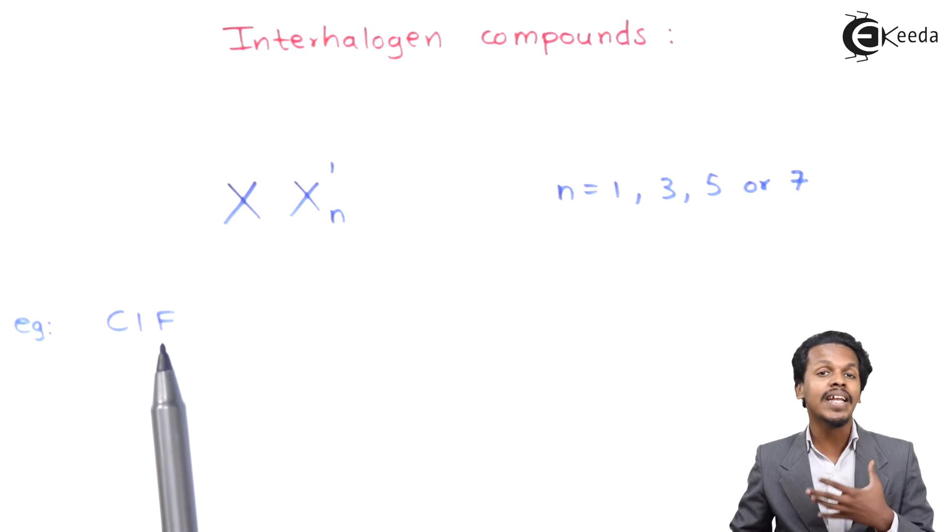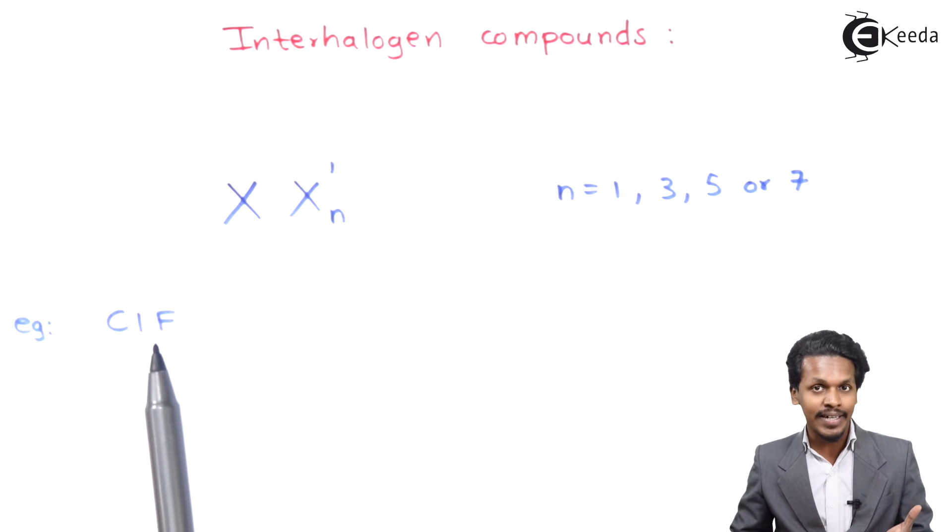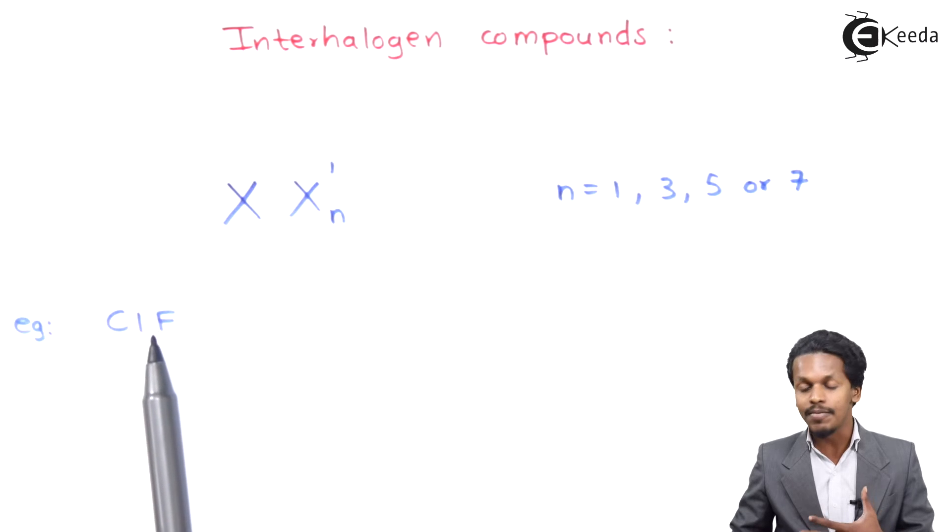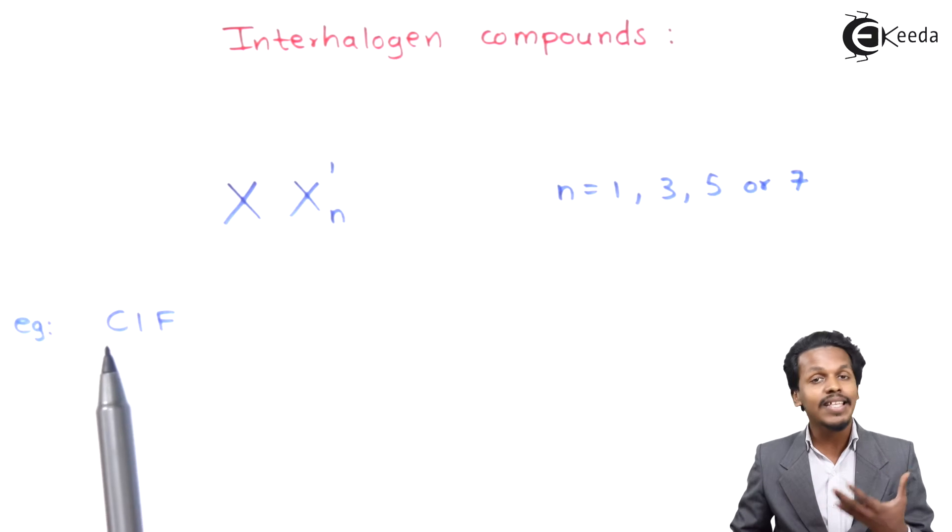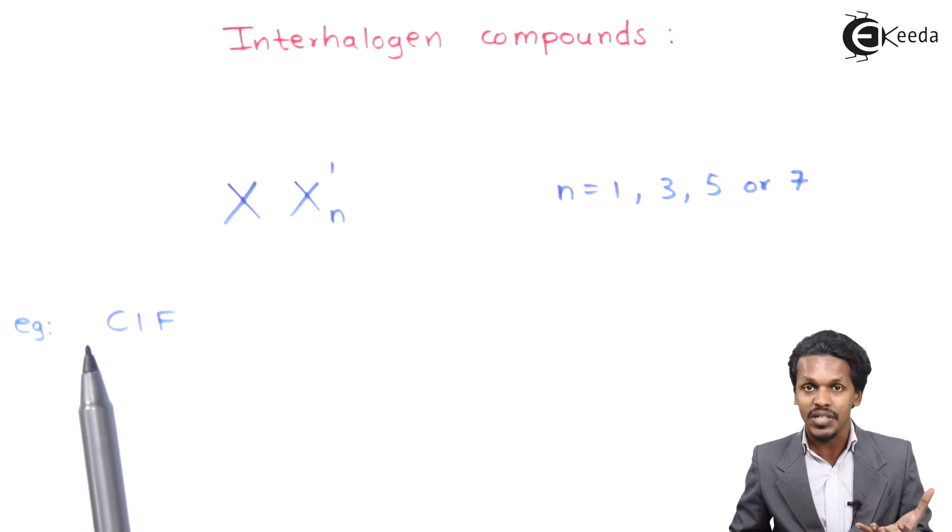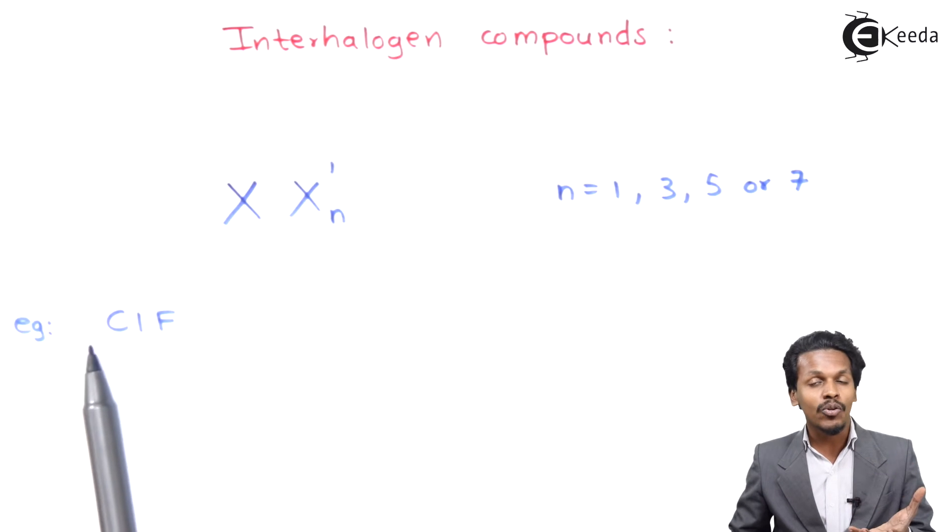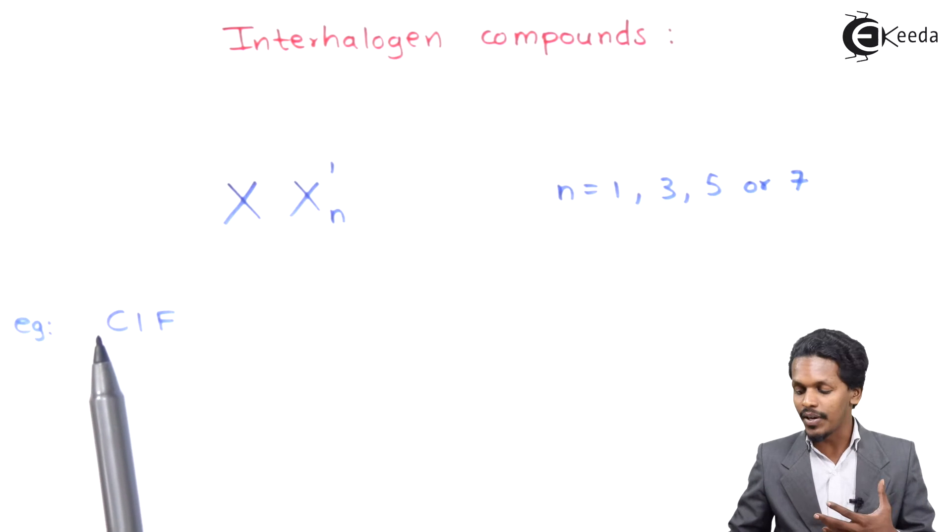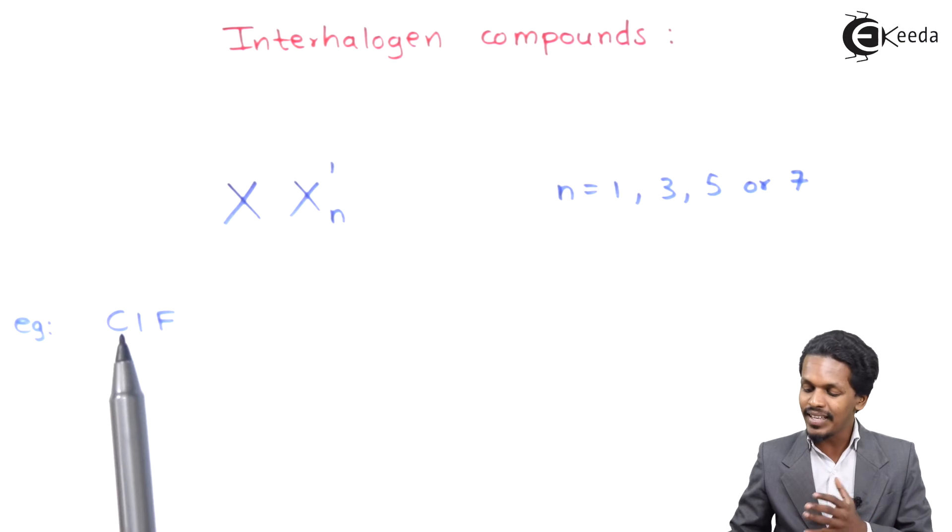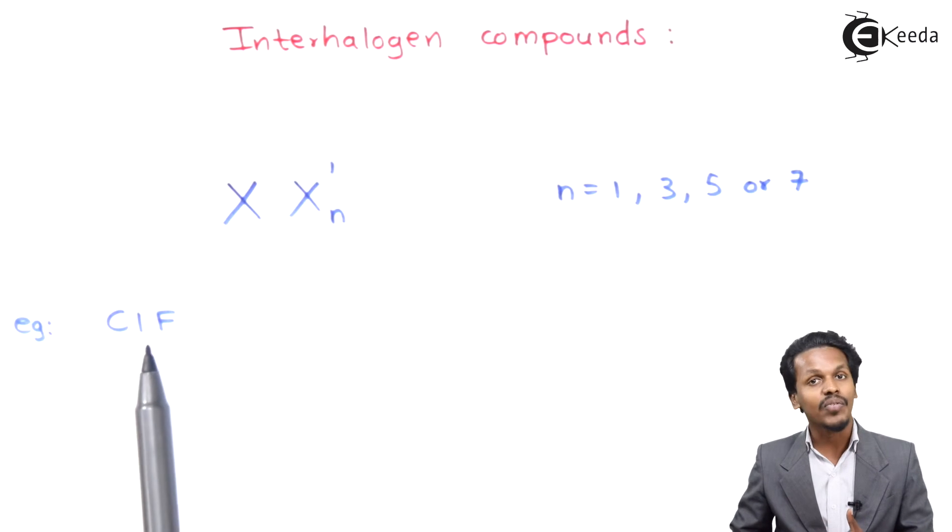Meanwhile, we also understand that fluorine is the most electronegative element in the whole periodic table. That's the reason fluorine is more electronegative while chlorine has more electropositivity. That's why we write Cl first and then F.